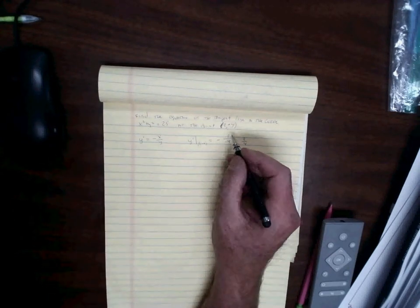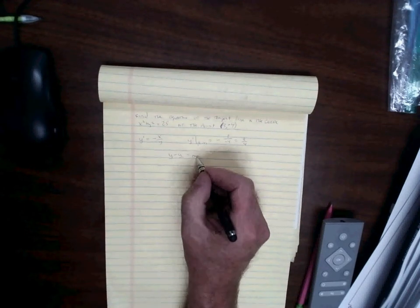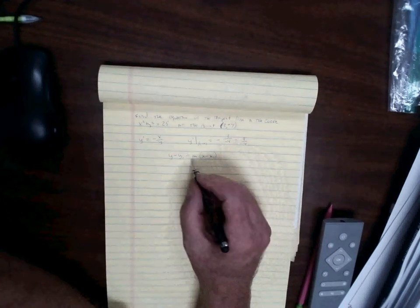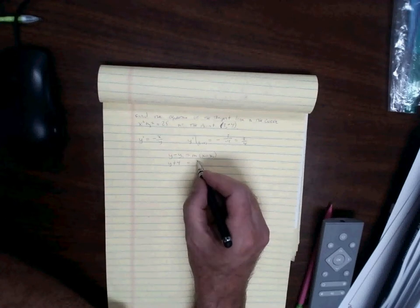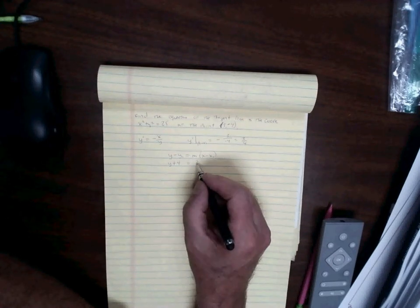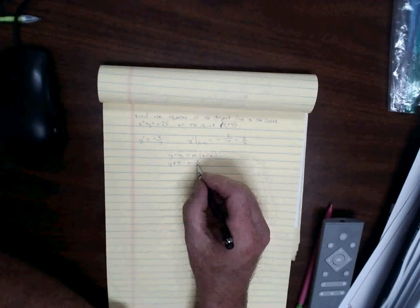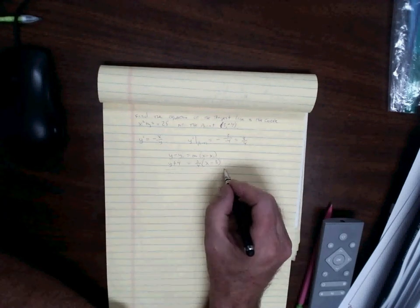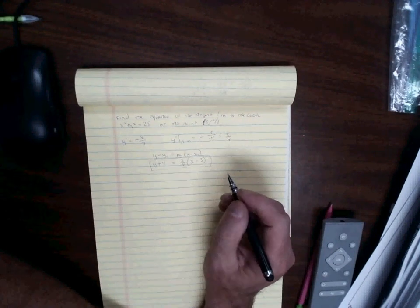The point of tangency is also on the tangent line, so we use point-slope form: y minus y1 equals slope times (x minus x1). Plugging in x1 equals 3 and y1 equals negative 4: y minus negative 4 is y plus 4. The slope is the derivative at the point, which is 3/4. So the equation is y plus 4 equals 3/4 times (x minus 3). This is the equation of the line tangent to the curve at the point (3, negative 4).